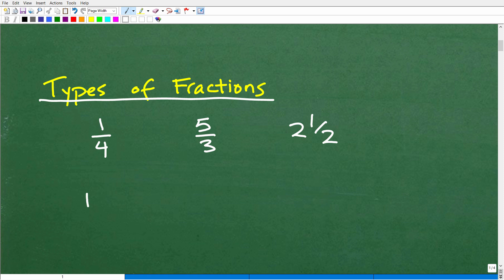This first one, we would call this or we refer to this as a proper fraction. Now each fraction, when we look at a fraction, there is a numerator, which is that top number and a denominator. So if the denominator, in this case, is bigger than the numerator, we call that a proper fraction. All right, so what do you think we're going to call this one? So pretty easy, right? We would call this an improper fraction because the numerator is bigger than the denominator, so five-thirds.